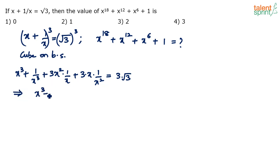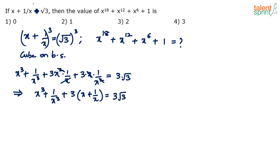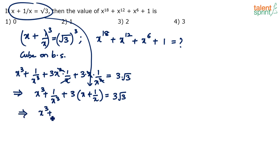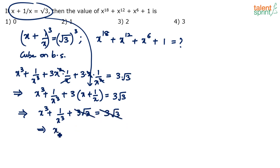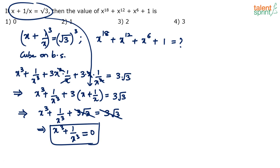The simplified step is: x cube plus 1 by x cube equals — x and x cancel here, giving 3x plus 3 by x. Taking 3 common, we have 3 times (x plus 1 by x) equals 3 root 3. Since x plus 1 by x equals root 3 is already given, substituting gives 3 into root 3, and the 3 root 3 cancels on both sides. So the key conclusion is x cube plus 1 by x cube equals 0.